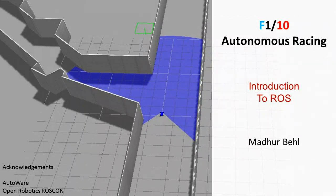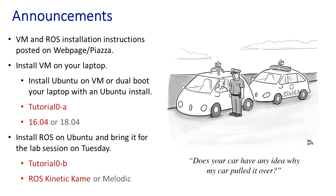All right, so let's get started. Today, as promised, we will jump into the first one-third of the course, which is just getting familiar with ROS. As was pointed out in the previous lecture, the brains of our F110 car, and for that matter any robot, is implemented using ROS — Robot Operating System. The idea is to give you a gentle introduction to ROS, but there are a few announcements.